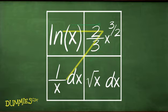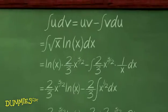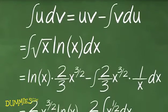minus the integral of the diagonal, 2 thirds x to the 3 over 2 power, times 1 over x, times dx. Try it. You'll see how this helps you learn the formula and organize problems. Ready to finish? Plug everything into the formula.